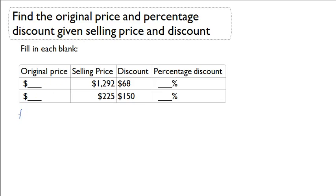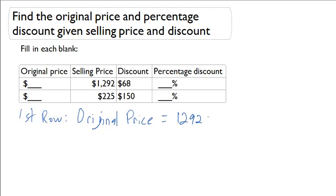Let's look at the first row first. I'm going to first calculate the original price. The original price has to be the sum of my selling price and my discount. So the original price has to be $12.92 plus $0.68, which is going to give me $13.60. So my original price for the first row has to be $13.60.